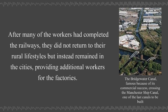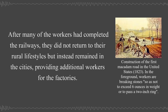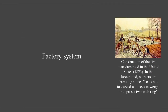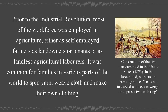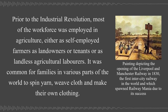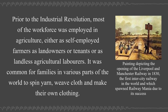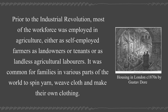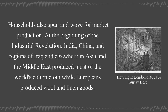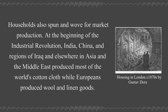After many of the workers had completed the railways, they did not return to their rural lifestyles but instead remained in the cities, providing additional workers for the factories. Prior to the Industrial Revolution, most of the workforce was employed in agriculture, either as self-employed farmers as landowners or tenants or as landless agricultural laborers. It was common for families to spin yarn, weave cloth, and make their own clothing, and households also spun and wove for market production.